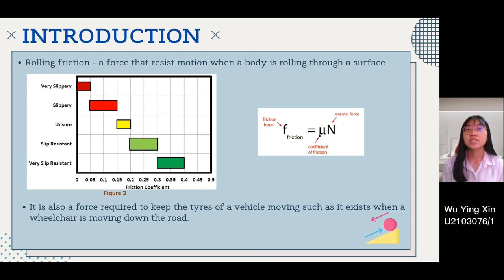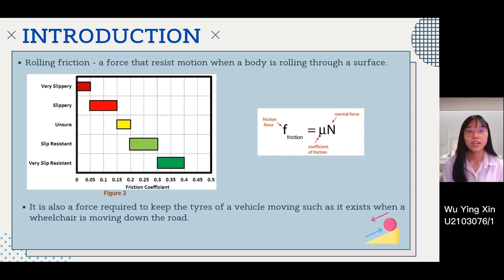Rolling friction is defined as a force that resists motion when a body is rolling on a surface, and is also the force required to keep the tires of a vehicle moving, such as when the wheelchair is moving down the road. Figure 3 shows the different values of rolling friction coefficient for different types of surfaces, and the formula to calculate the friction force is shown in the slide.